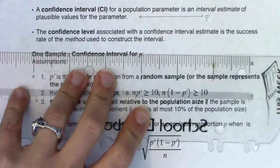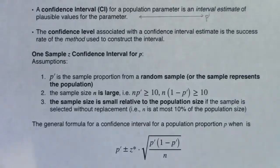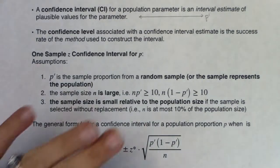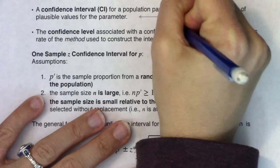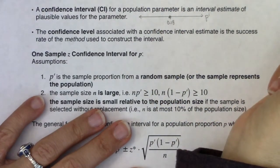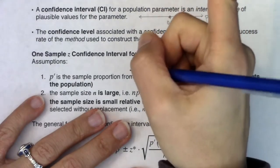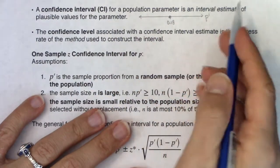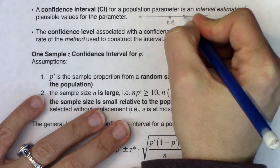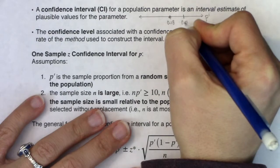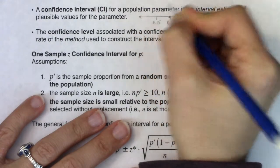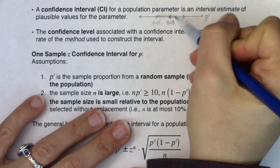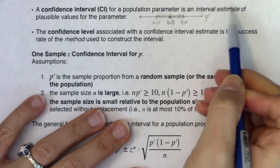From the red beads example, our point estimate was 17.9%, which I'll approximate as 18%. On a number line, a point estimate is just one dot — one point. To go from a point estimate to a confidence interval, we add a margin of error on either side. For example, a 3% margin of error gives us 15% to 21%.